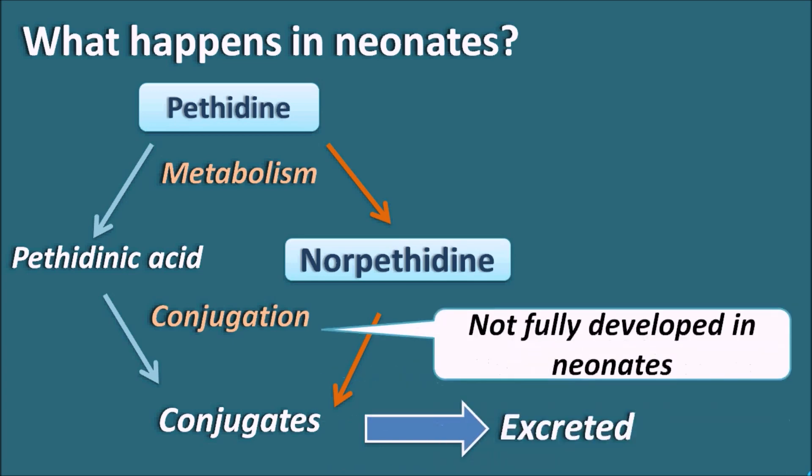But in neonates, the conjugation mechanism is not completely developed, so these two metabolites are not completely excreted in the urine. This results in accumulation of Pethidine, Pethidinic acid, and Nor-Pethidine in the neonates. Since Pethidinic acid is inactive, it does not produce significant side effects, but accumulated Pethidine and Nor-Pethidine can produce severe side effects in the neonate.